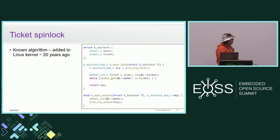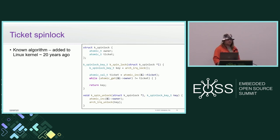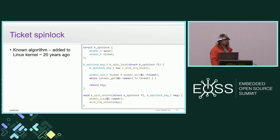One way to avoid this is to use another spinlock algorithm with a fairness guarantee — for example, a ticket spinlock. This is not something new; it was added to the Linux kernel a long time ago. Let's take a look at how it's implemented.